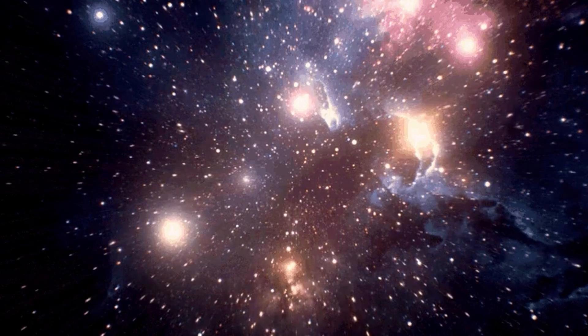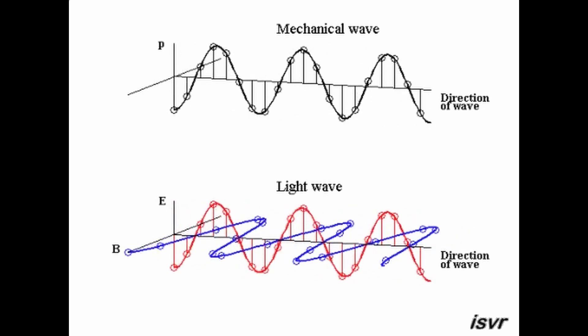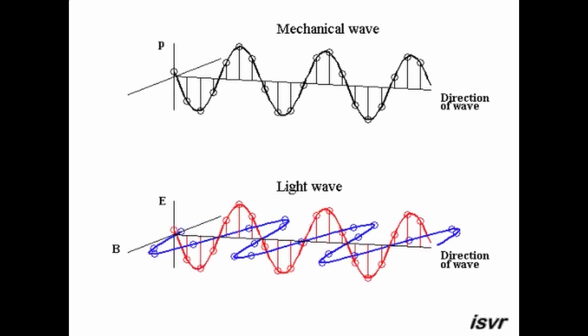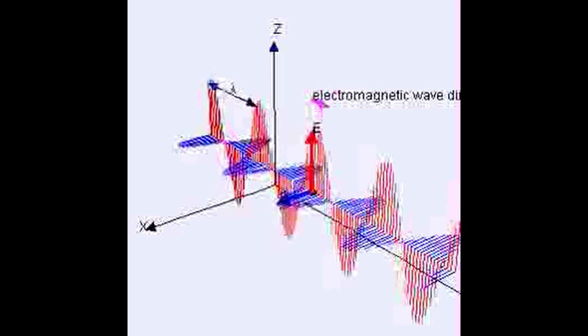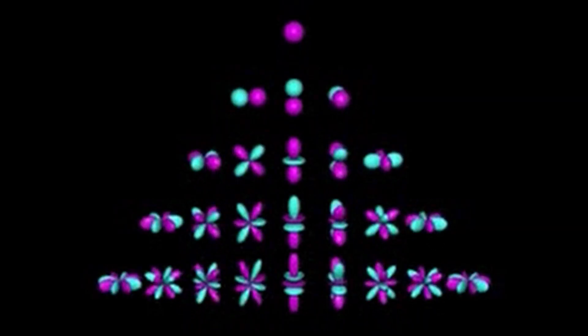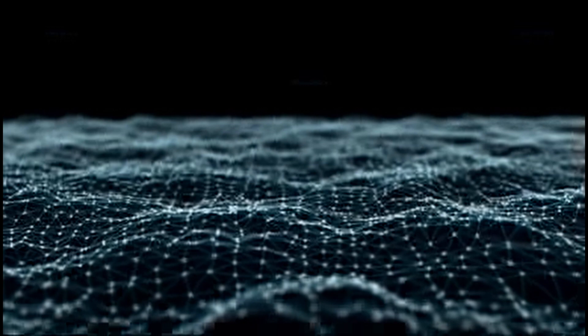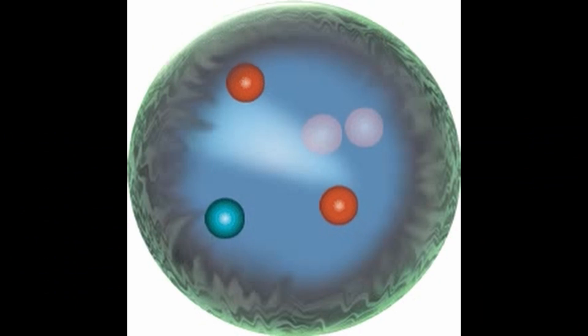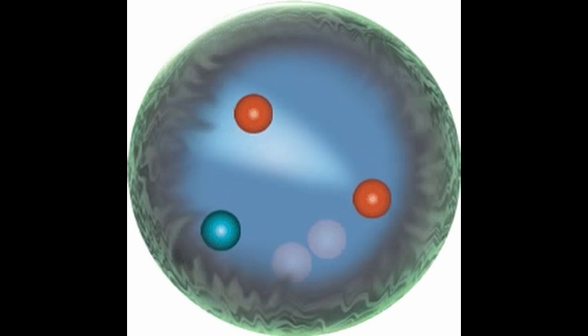Creating and manipulating time crystals with more complex structures and dynamics is a challenging and active area of research in condensed matter physics. There are different methods and materials that can be used, such as trapped ions, diamond defects, and superconducting qubits, each with its own advantages and limitations. One of the main challenges is to design a periodic driving force that induces the spontaneous breaking of time translation symmetry without heating up the system or destroying its coherence. The driving force must be carefully tuned to avoid resonances or unwanted transitions, and must be robust against noise and fluctuations.